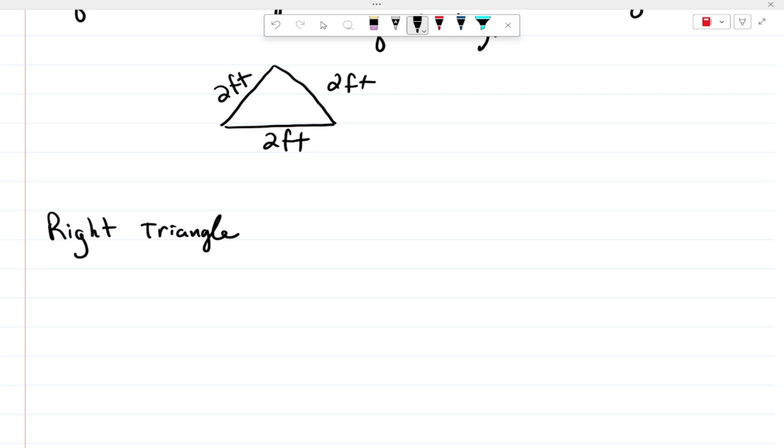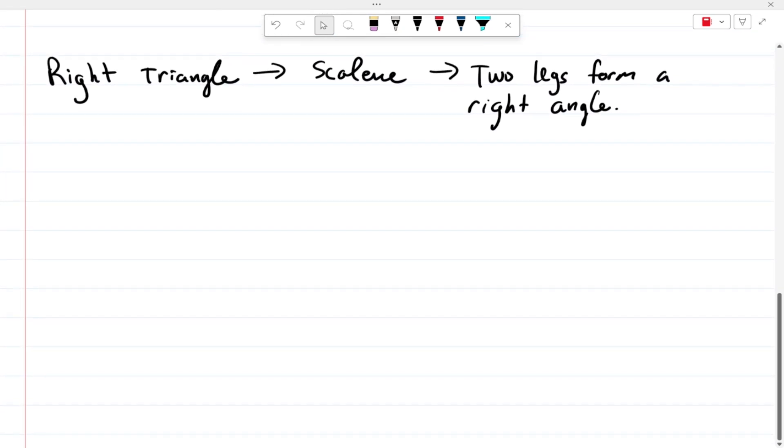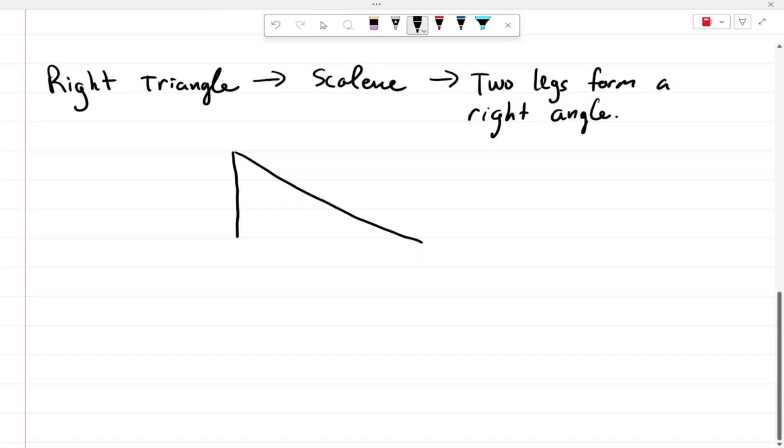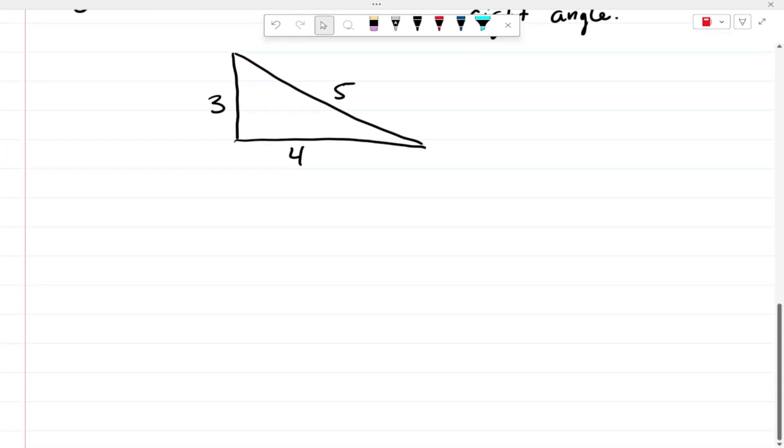And then finally we have a right triangle, which is kind of like a subset of the scalene, but what makes this really special is that two legs form a right angle. It looks just like this, where this would be like three, four, and five. In fact, a three-four-five triangle is very special; we call it a Pythagorean triple.